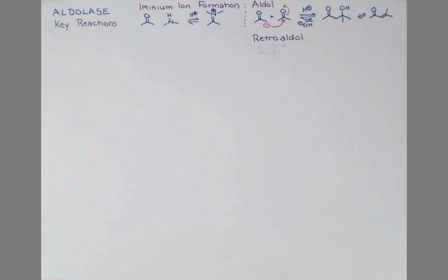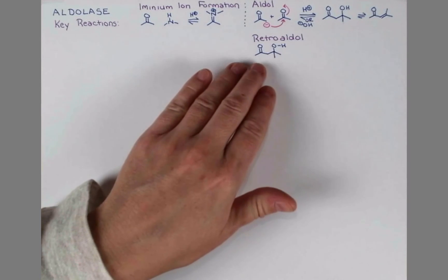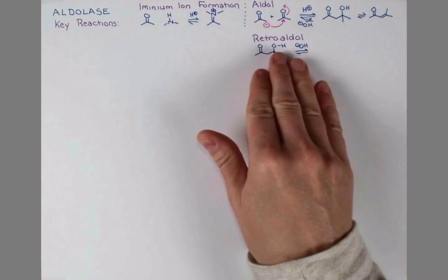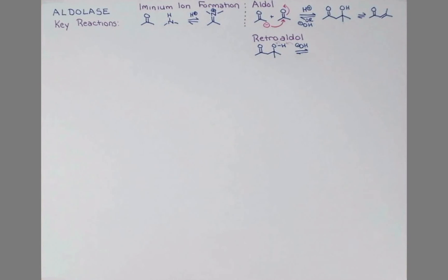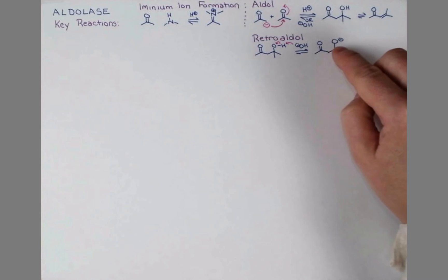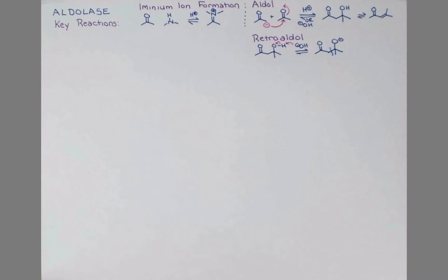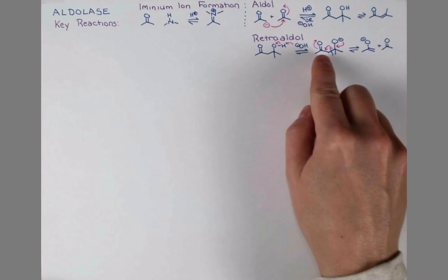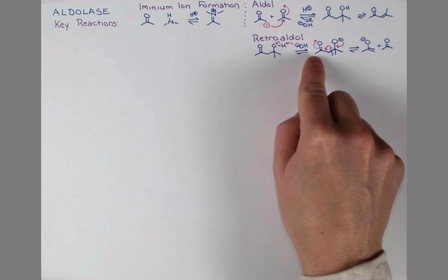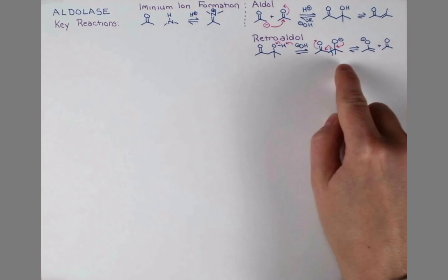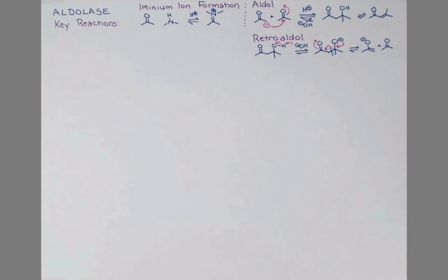We'll begin from the hydroxy ketone, and if we treat this with base, we'll get some deprotonation of this alcohol. The alkoxide that we make can push these electrons back down, promoting the cleavage of this bond here. The arrow pushing looks like this, and if we follow our arrows, we'll produce an enolate and a ketone. So we're showing this enolate forming from this bond breaking, and these electrons pushing back down give our ketone.